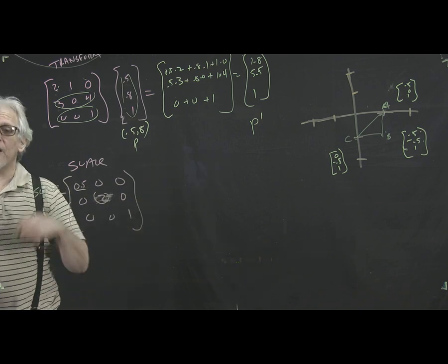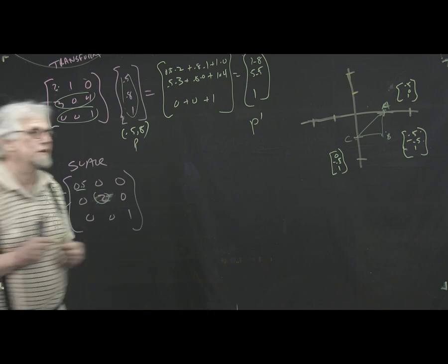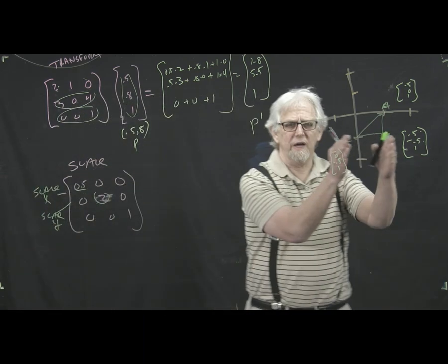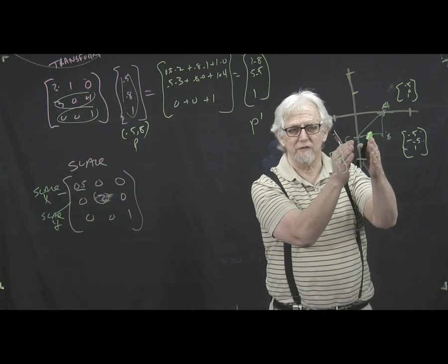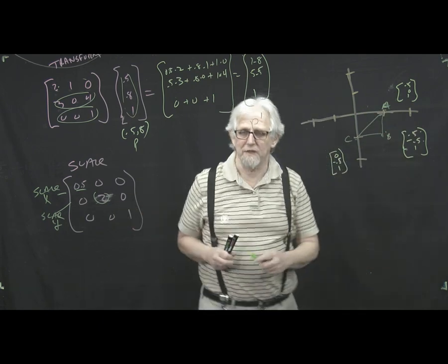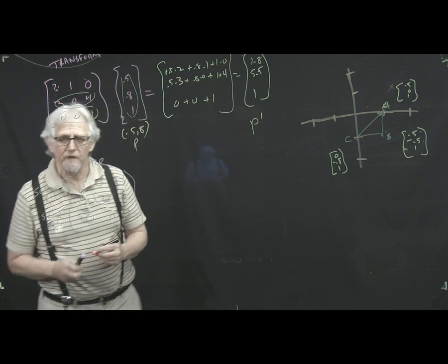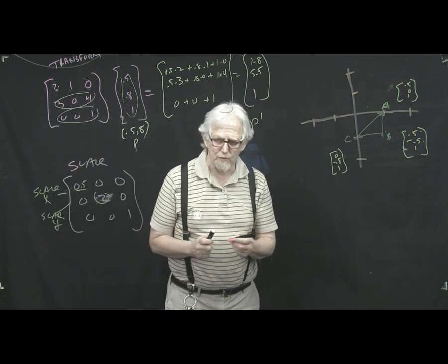So the idea is that if I take the three points of this triangle and I multiply them by this matrix and then plot the three points, I should have a triangle which is shrunk by, multiplied by 0.5 in the x dimension and expanded in the y dimension. And it's pretty simple to see how it works, right? So let me just quickly do that.